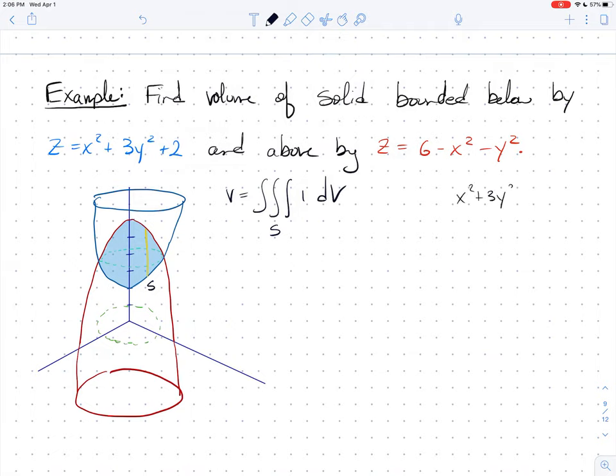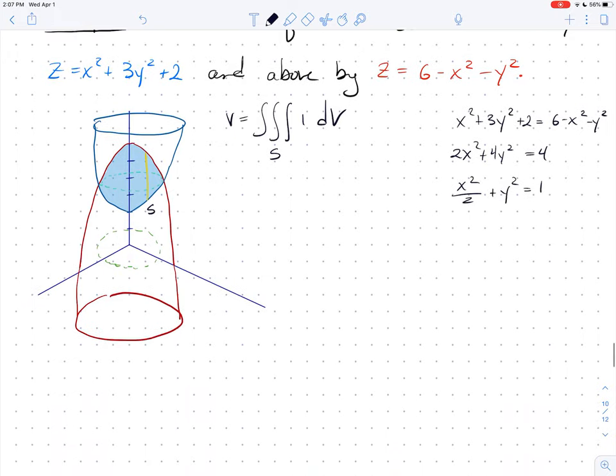I'm just going to intersect those two curves. I'm going to get x squared plus 3y squared plus 2 equals 6 minus x squared minus y squared. Move everything over, we get 2x squared plus 4y squared equals 4. Divide by 4 and we have x squared over 2 plus y squared equals 1. That's the intersection curve and that gives me the equation for the projection into the xy plane.